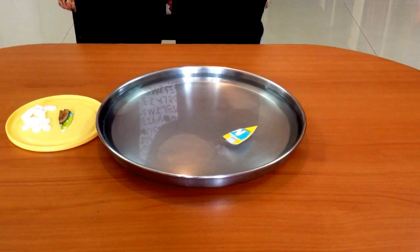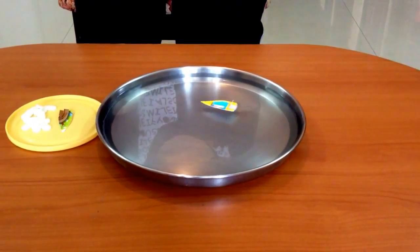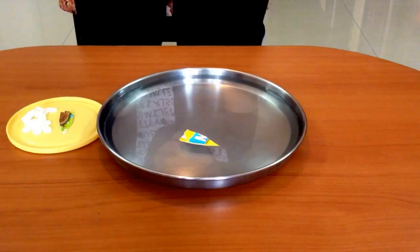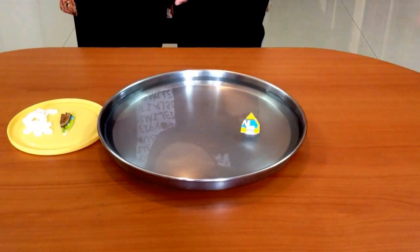Surface tension is defined as the property of liquid that allows it to resist an external force due to the cohesive nature of the water molecules.